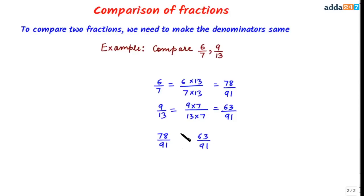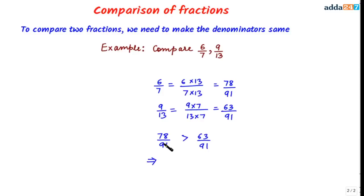Now we can compare the numerators. We can clearly see that 63 is less than 78, so 78/91 is greater than 63/91. Since 78/91 equals 6/7 and 63/91 equals 9/13, we can say that 6/7 is greater than 9/13.